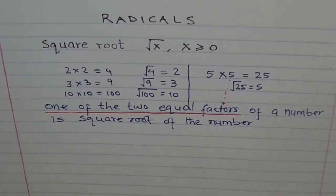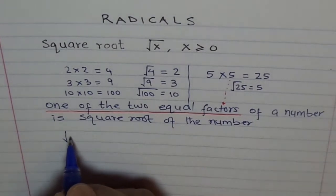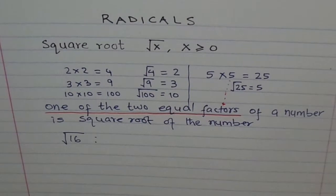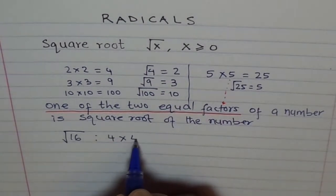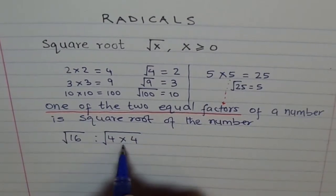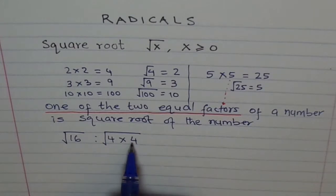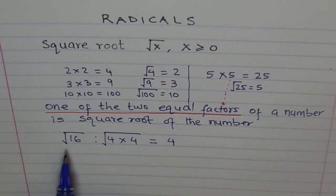Now we will do some more examples. What is the square root of 16? The way to do it is to find two factors which are equal. We know 2 times 8 is 16, but 2 and 8 are not equal. 4 times 4 is 16, so I can write 16 as 4 times 4. Square root is one of the two equal factors, so I can write this equal to 4. Square root of 16 is 4.